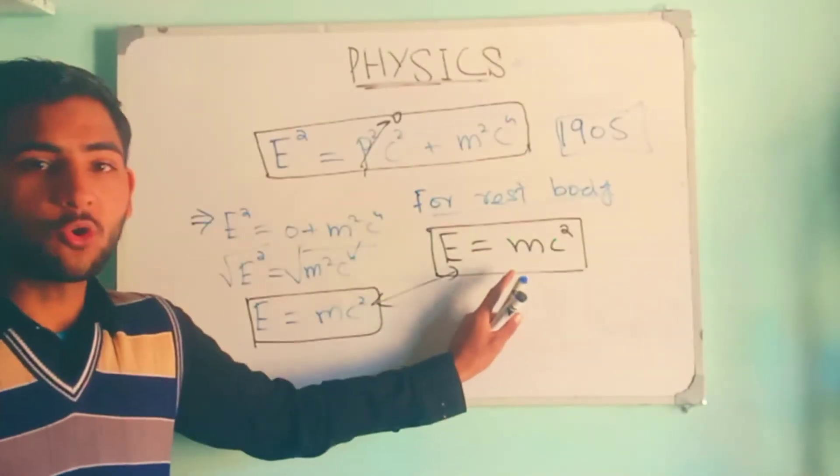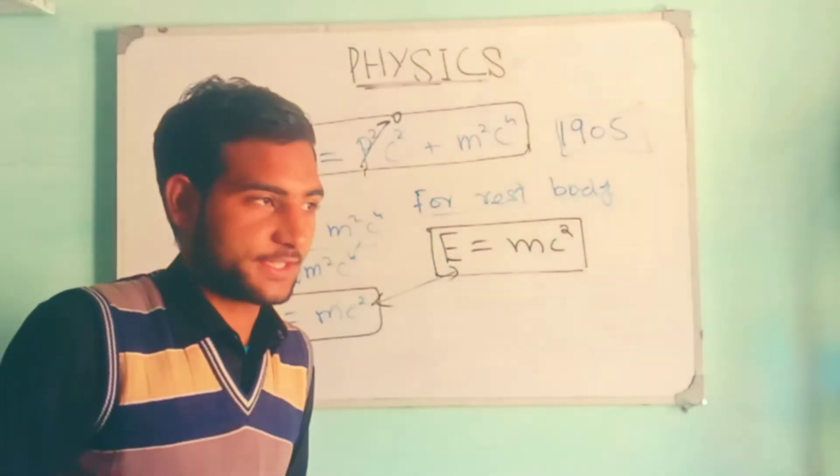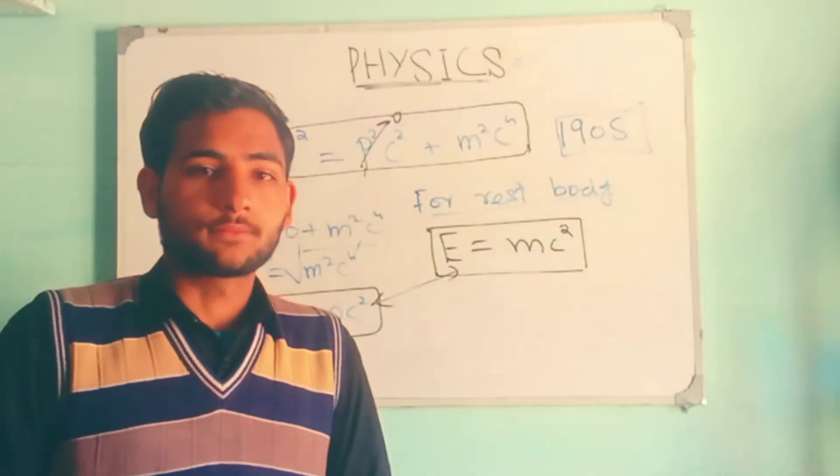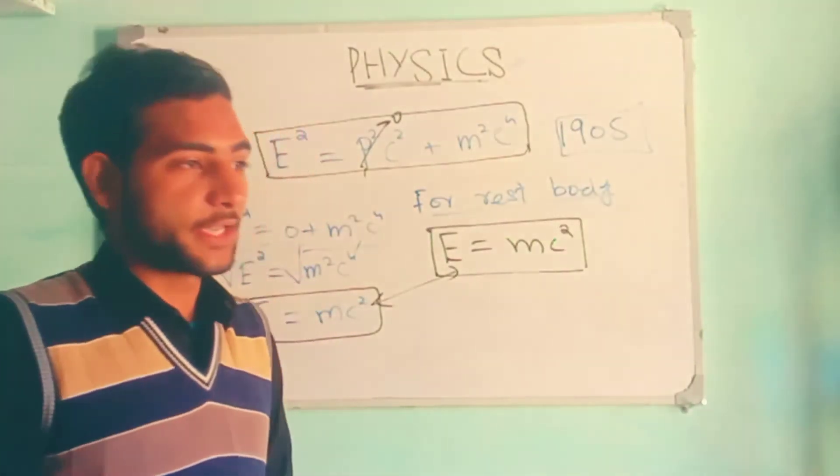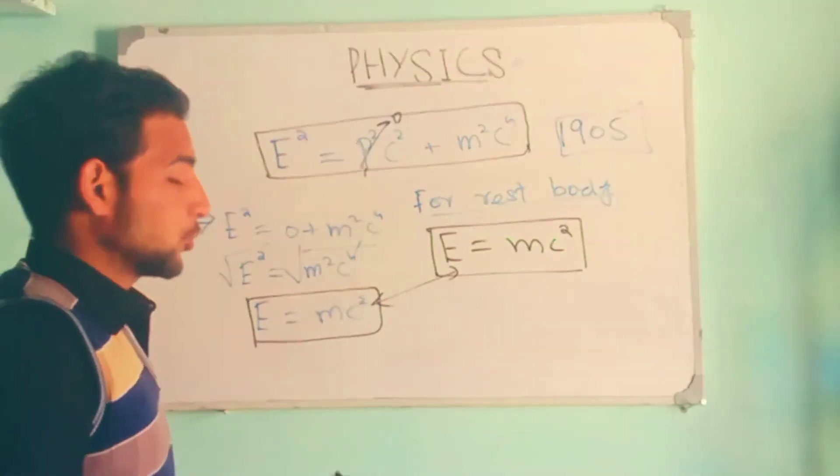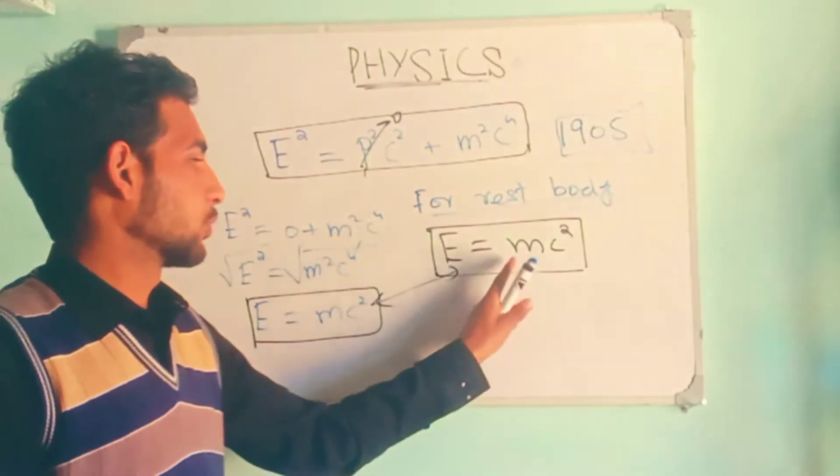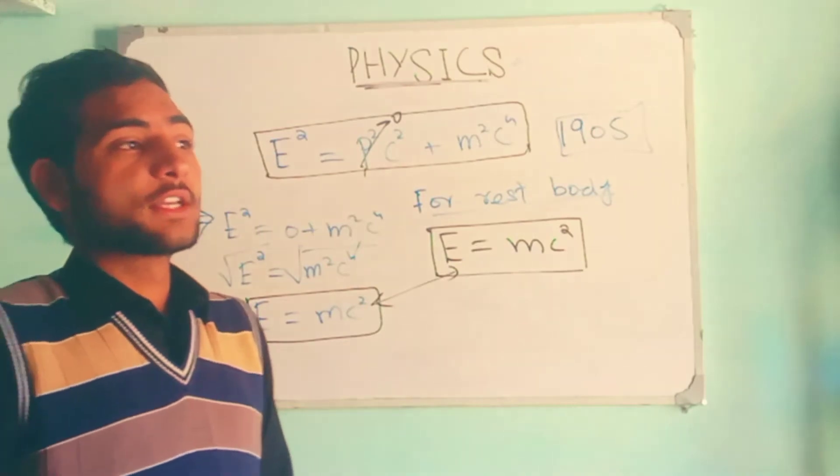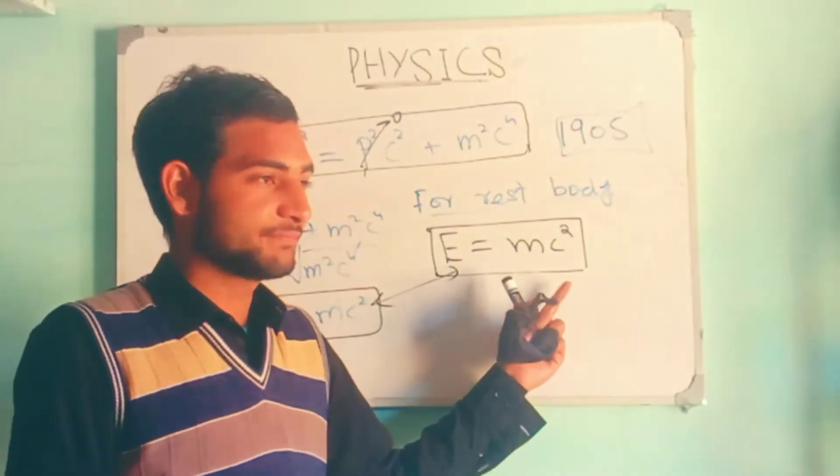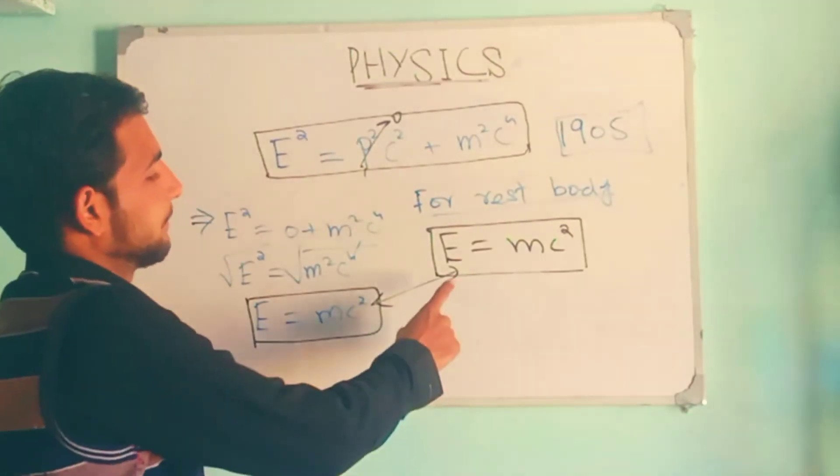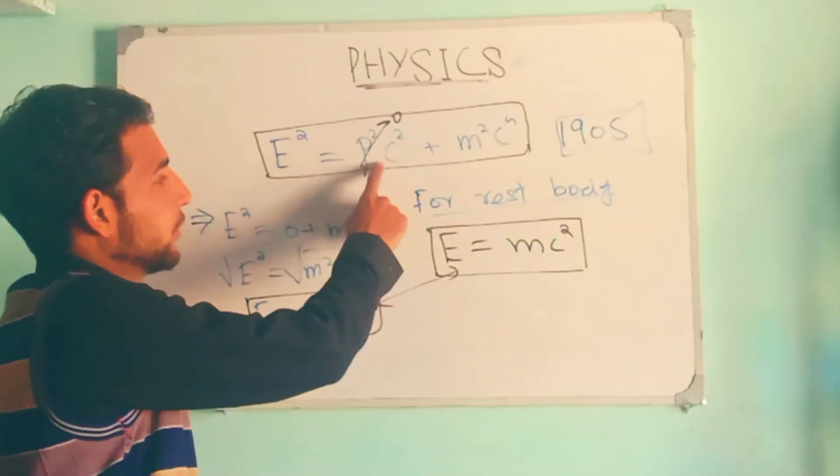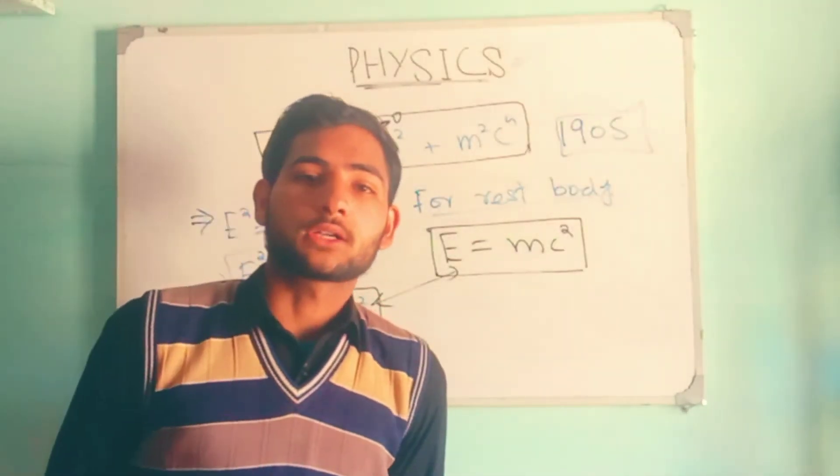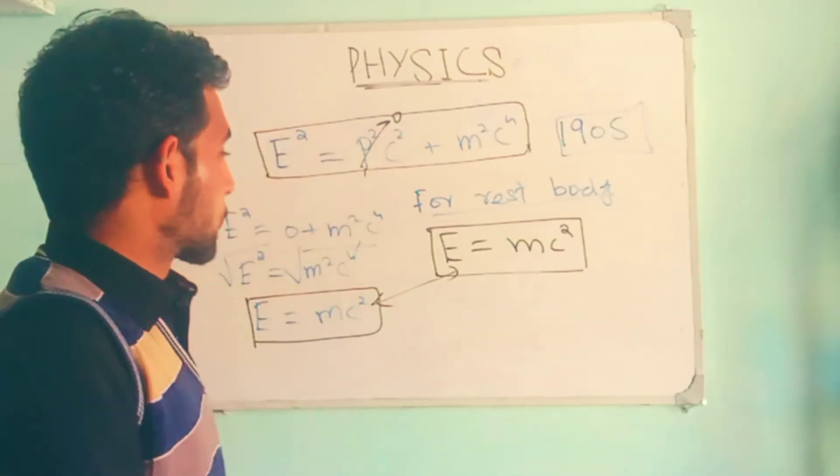This equation is only applicable when mass is at rest. Let's say I have 10 kg of mass - how much energy is in it? I can use this equation. If a body is moving with speed, then this equation is not applicable. Then the equation with momentum involved will be used, as momentum is the product of mass and velocity.